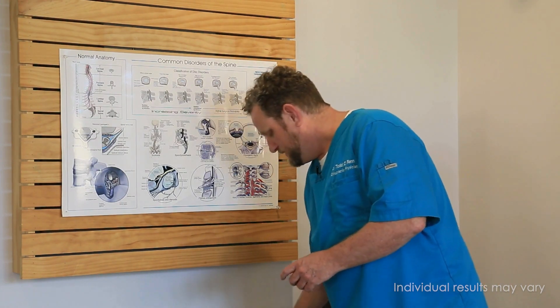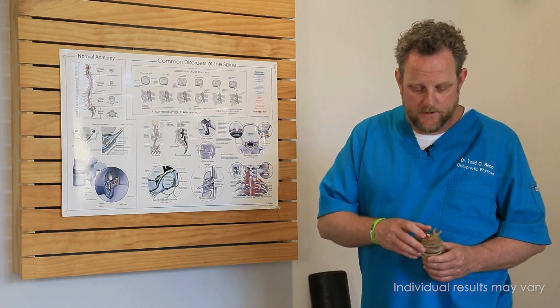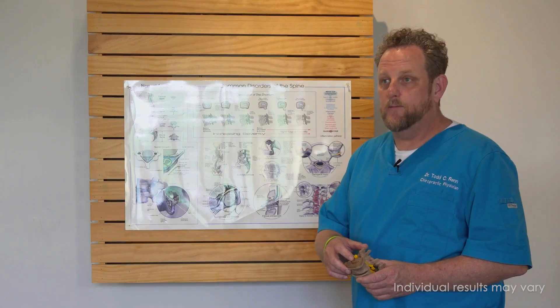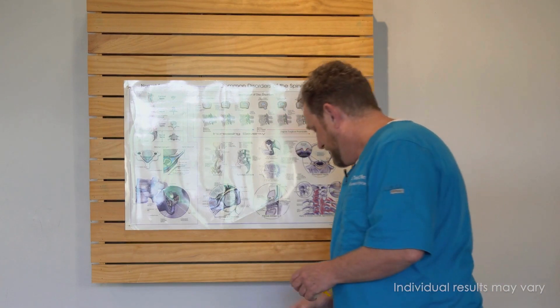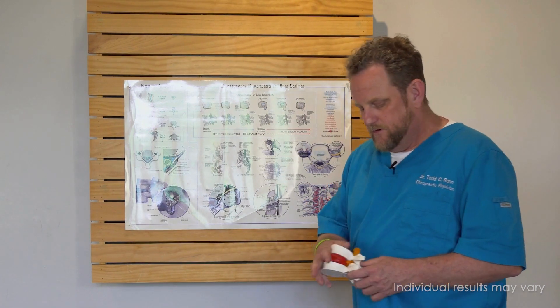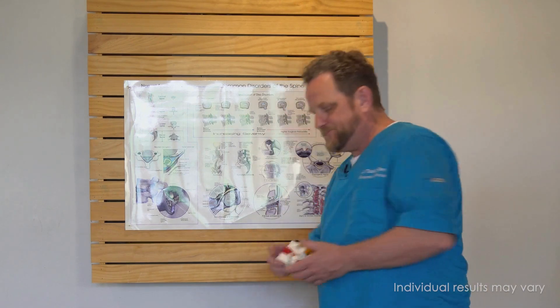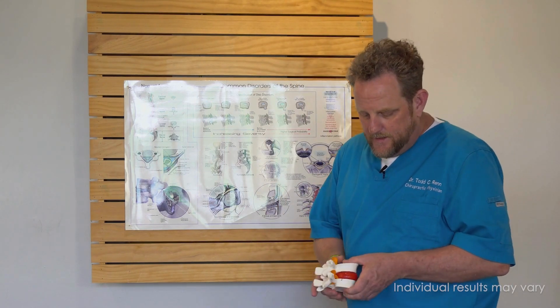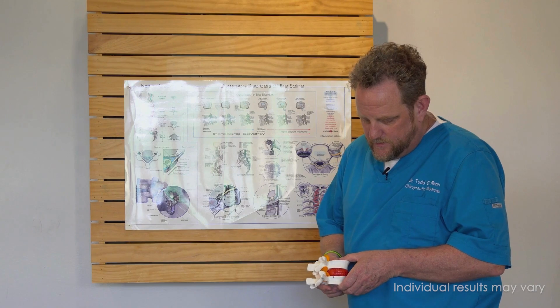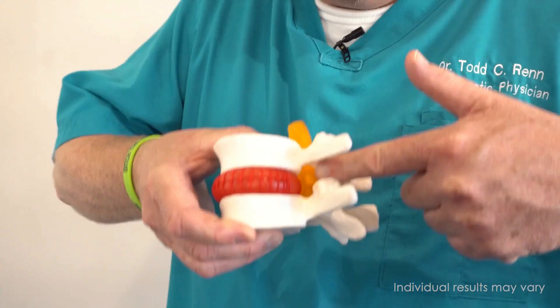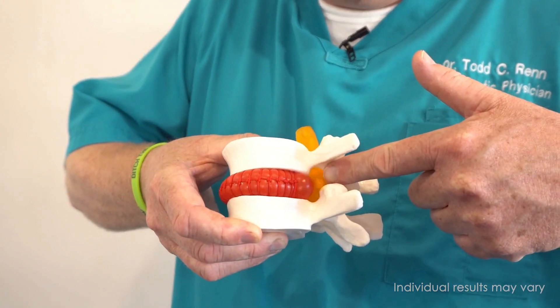When we have a herniated disc, that's the third one here, where the material is actually coming out like that. You can see in real motion - we have a vertebrae and a herniated disc where the disc pushes out.